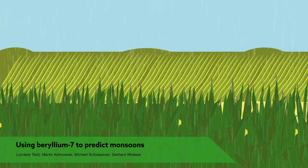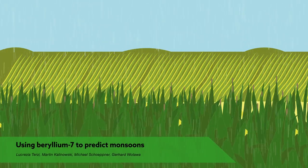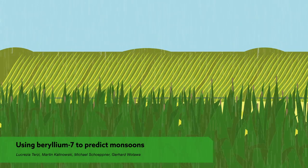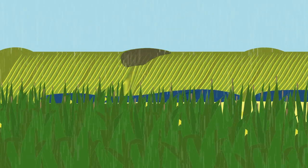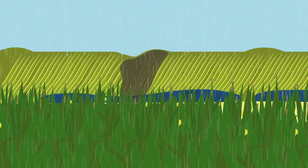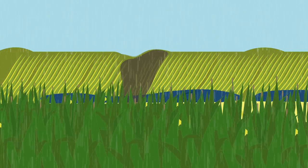Monsoons impact millions of people every year. Farmers rely on rain for their harvests, and lives are threatened by flooding or landslides. And yet, it remains very hard to predict monsoons early and accurately.